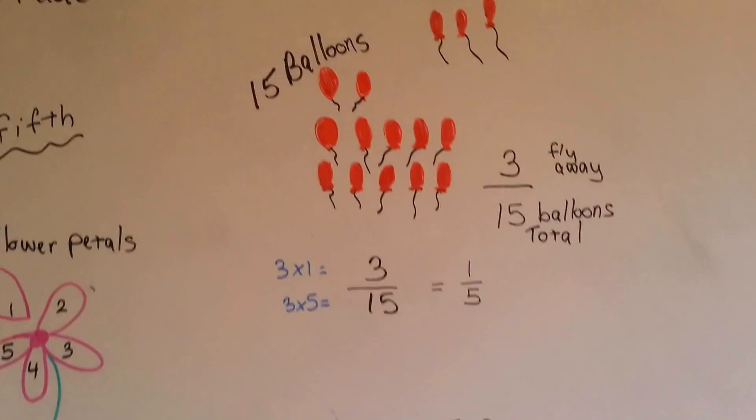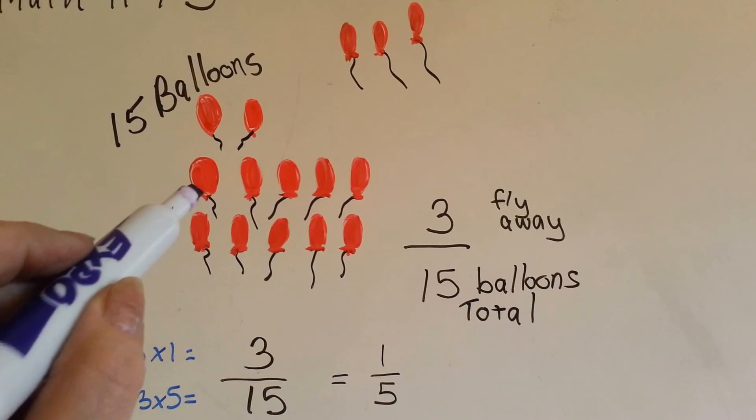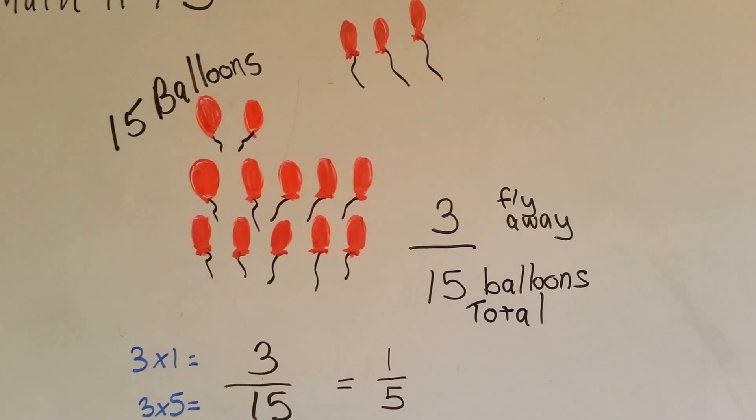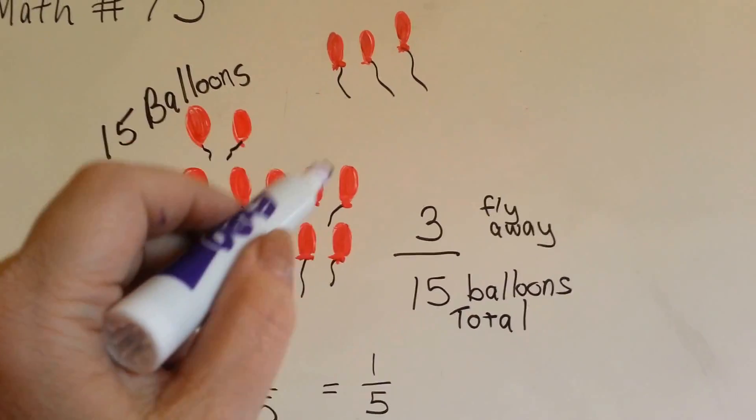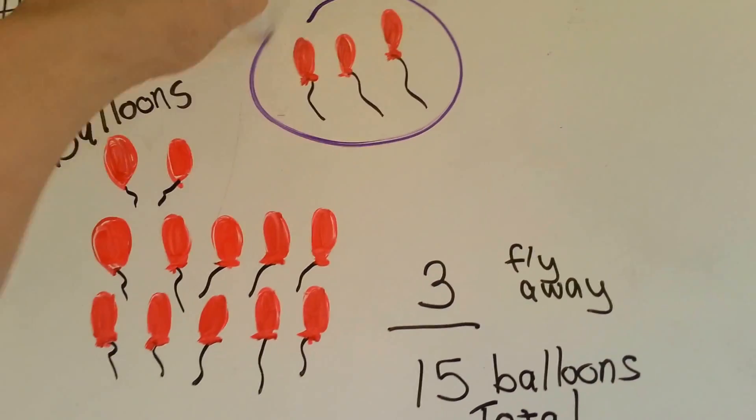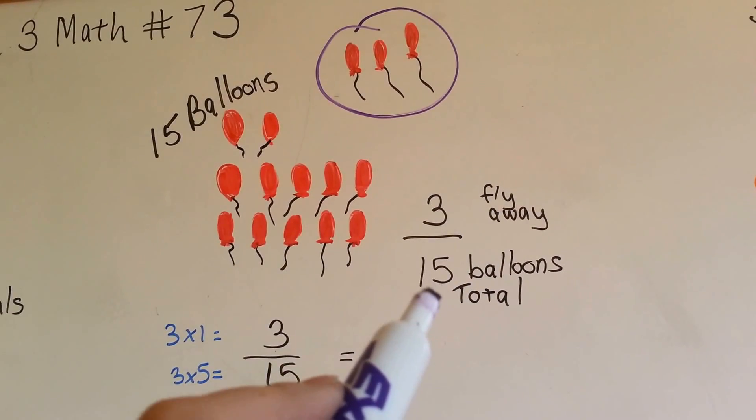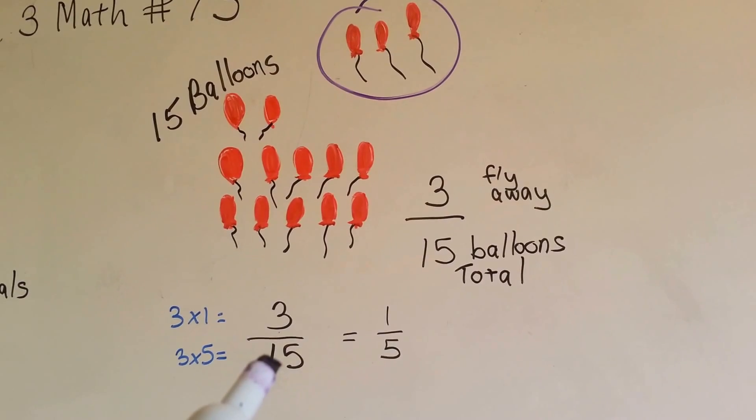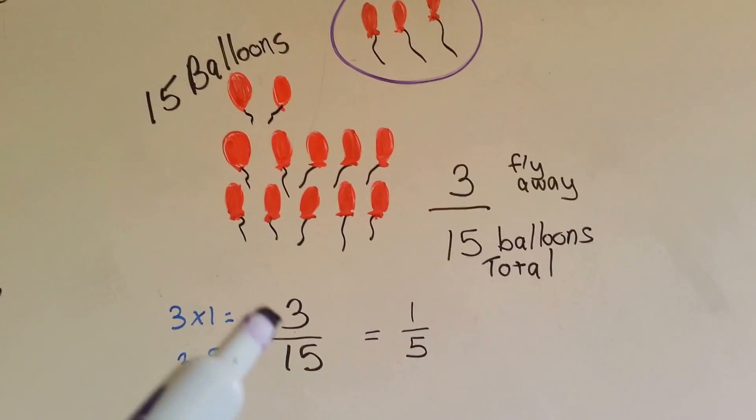Okay, let's look at this. We've got fifteen balloons. Five, ten, eleven, twelve, thirteen, fourteen, fifteen. Out of these fifteen balloons, three are flying away. Three fly away out of fifteen balloons total. Three-fifteenths have flown away. Three of the fifteen.